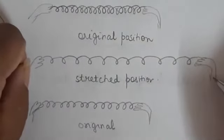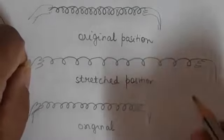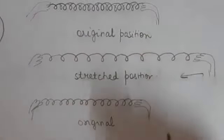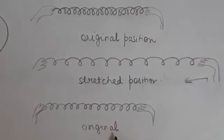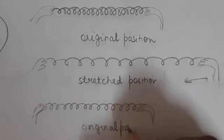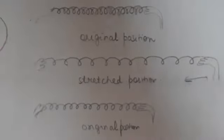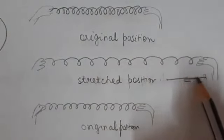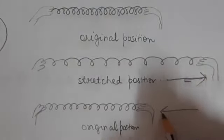After stretching up to this point, you remove it — you release it. Then what will happen? The spring will move back to its original position. When it is released, it will move back and regain its original position. Earlier it was at its original position. When you stretched it, it increased up to here. When you remove it, it will try to regain its original position.